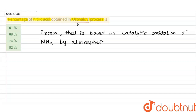In this process, there are three main steps, and we will see each and every step one by one. The first step is named as the catalytic oxidation of ammonia.